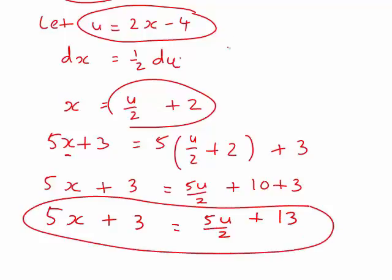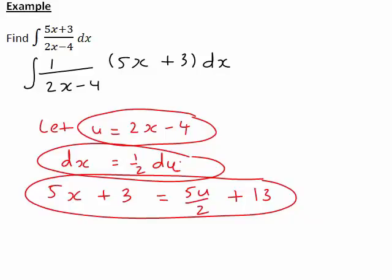With that information, and our earlier information about u and du, we can rewrite our initial integral in terms of u. Given this information, the first bit, integral of 1 divided by 2x minus 4, becomes integral of 1 divided by u. The 5x plus 3 part then becomes replaced with 5u divided by 2 plus 13, and the dx part is replaced with 1 half du.